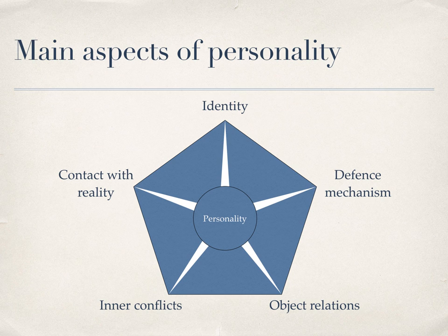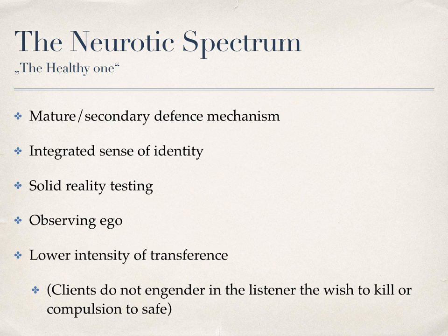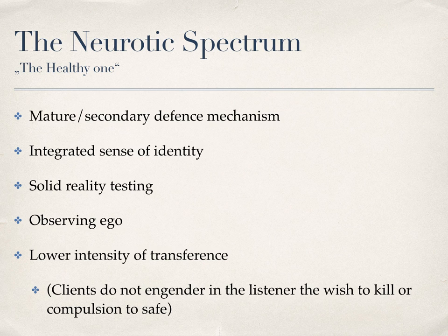And last but not least, the contact with reality, which is a self-explanatory item — is the patient in contact with reality? Are their stories or memories in touch with reality? So let's take a look at the neurotics, or the healthy ones. They can be identified by mature or secondary defense mechanisms and an integrated sense of self. They can answer who they are in all its complexity. Neurotics use primary defense mechanisms as well as mature ones such as intellectualization, repression, displacement, and sublimation. Neurotics are in touch with reality and have an observing ego.